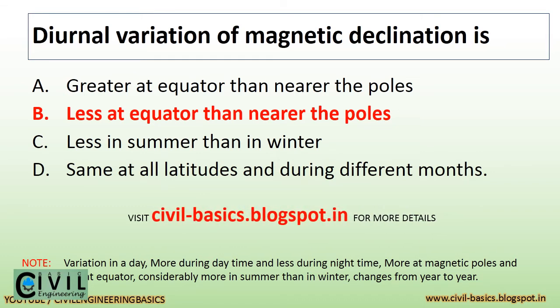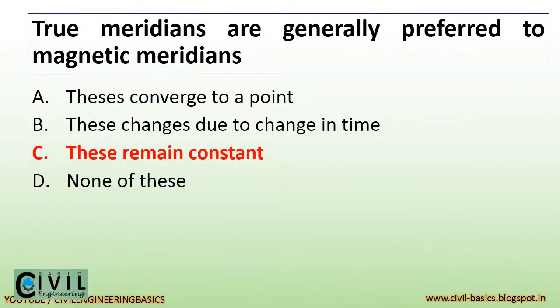Diurnal variation of magnetic declination is less adequate nearer to the poles. Variation in a day is more during daytime and less during nighttime, more at magnetic poles and less near the equator, considerably more in summer than in winter, and changes from year to year. True meridians are generally preferred to magnetic meridians because these remain constant.